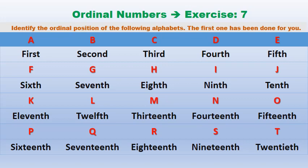For example: A first — A is the first letter. B second — B is the second letter. C third — C is the third letter in the alphabet. In the same way, you need to write the alphabets up to the 20th, and after that we will start solving our exercise.